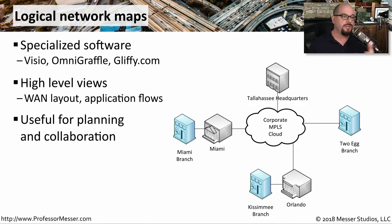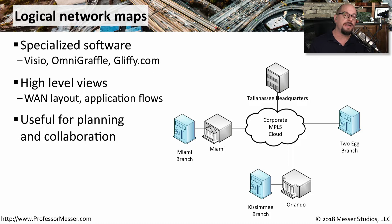If you're working with a third party, it's common to use this logical network map to show how an application data flow may be working, or to see exactly how the network may be laid out across a large area. This is a good starting point, and then you can work down further to find more details in the configuration as the collaboration goes along.